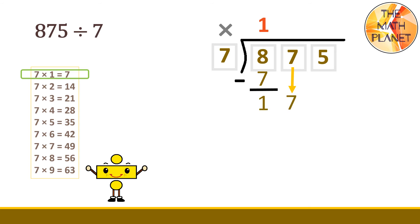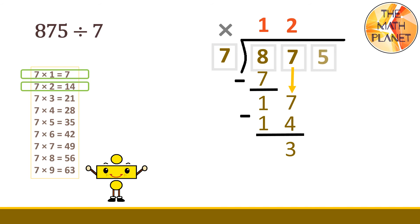Now, what is 17 divided by 7? Use the second rule. 17 divided by 7 equals 2. Write the 2 above the 7. Then, multiply: 2 times 7 equals 14. Finally, we subtract: 17 minus 14 equals 3. Are we done? No, not yet. We still have one more digit to divide. So, we'll bring down the 5, which is the next digit.